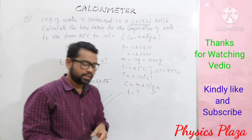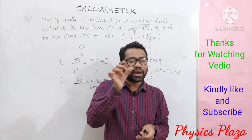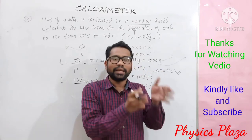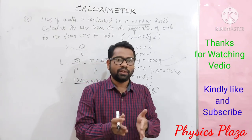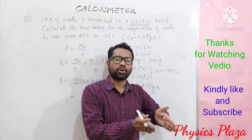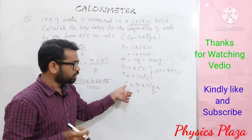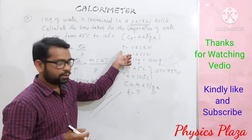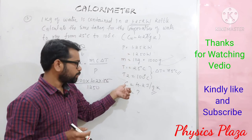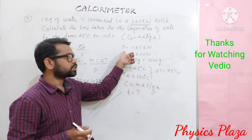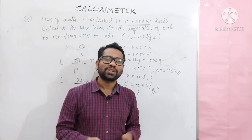This is what today's session covered. Whenever doing numericals, first read the data — what is given and what is to be calculated. Check whether all values are in the same system of units. Whenever specific heat capacity is given in grams, mass should also be in grams; if given in kg, mass should be in kg. Thank you so much, all the best.